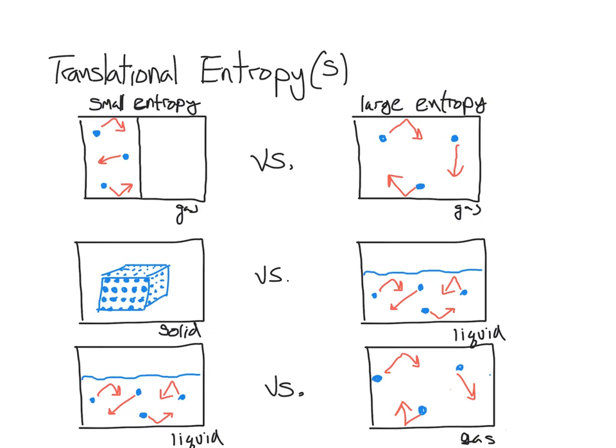Now let's compare the translational entropy of a liquid versus a gas sample. For a liquid, the molecules can move translationally relative to each other, but the amount of volume or space available to them is restricted, so the translational energy is spread over a smaller space. The gas, on the other hand, is free to move and fill the volume of the container, so that translational entropy is spread out over more space. Therefore, the gas sample has a larger entropy. The general trend is that the entropy of the gas is highest, followed by the liquid, followed by the solid, which has the lowest entropy for any given material.